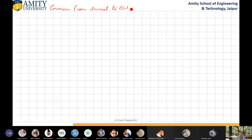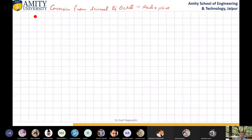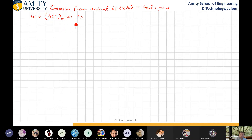Conversion from decimal to octal. We have the expansion formula and we will see its use. This conversion includes decimal points — the octal point. Suppose an integer number like 459 is given in decimal, and the question is: you need to convert it into its equivalent octal number. So what is the solution?